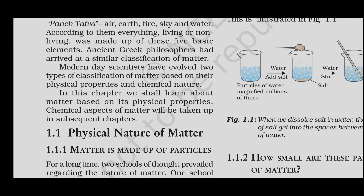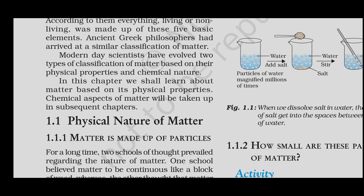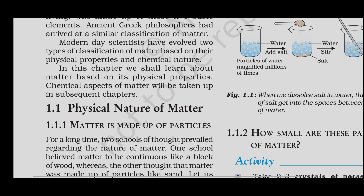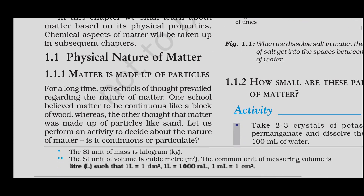Modern day scientists have evolved two types of classification of matter based on their physical property and chemical nature. We will learn about the matter based on its physical properties, and the chemical aspects of matter will be taken up in subsequent chapters.